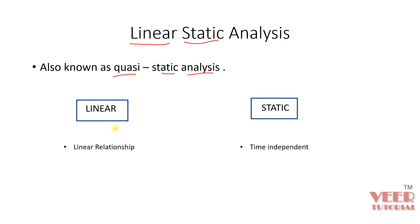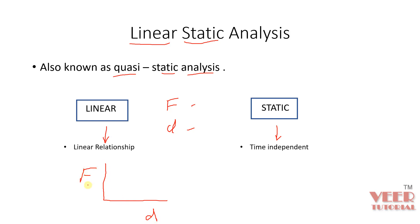Linear means whenever we have a linear relationship between quantities, and static means whenever anything is independent of time. When we perform any analysis, we have parameters like force and displacement. Linear static is related to force and displacement. Whenever we apply a force on a body and get some displacement, and the graph between force and displacement is a straight line, that type of analysis is called linear analysis.